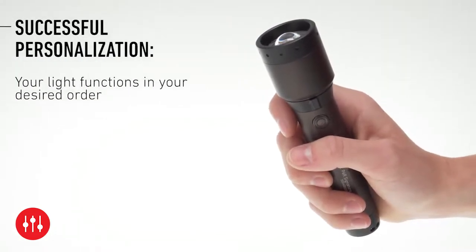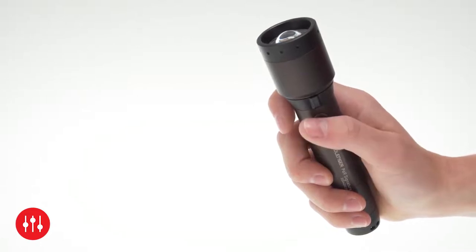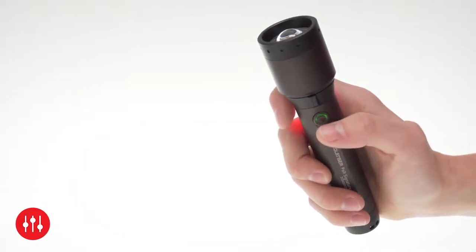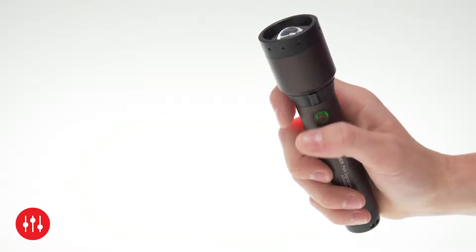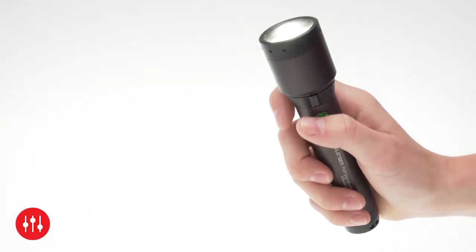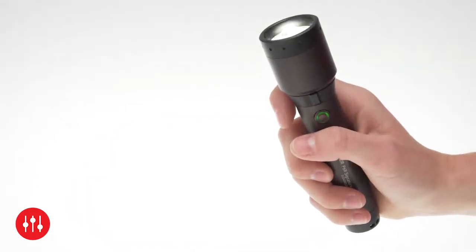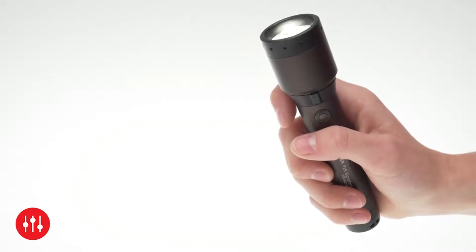You have now overwritten the factory settings. Now when you turn on the light, it will start automatically with red light, change to constant light in the selected dimming level, and then change to the last function you set, the blink light.